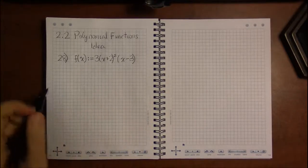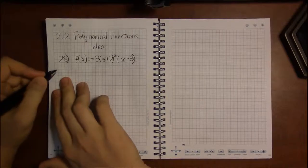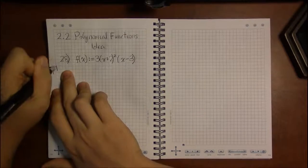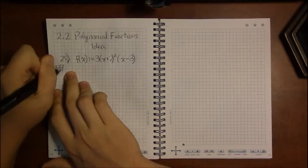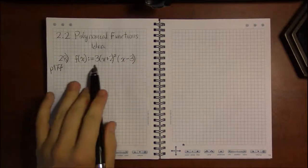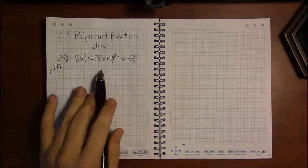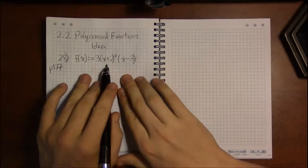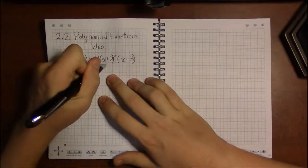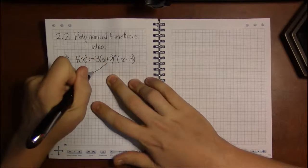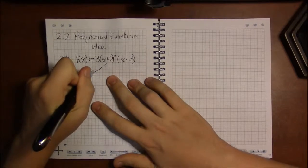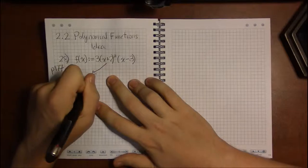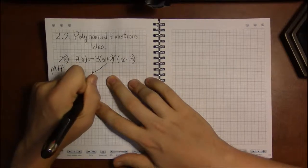In the last video we finished up by looking at problem 28 on page 177. And there we realized we set this equal to 0 to find the x-intercepts, and we found that this factor, the x plus 2 squared, when we set that equal to 0 and solved, that gave us an x-intercept of x equals minus 2.